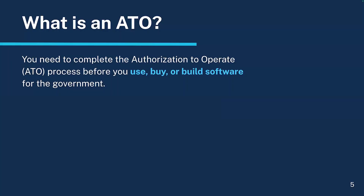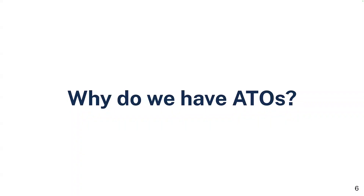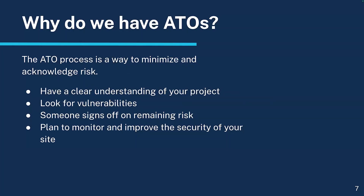What is an ATO? You need to complete an authorization to operate before you use, buy, or build software for the government. For most government workers, this is a mostly behind-the-scenes process for the tools that you use. But you may run across this process if you need to build or buy software.